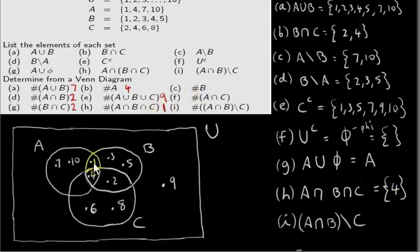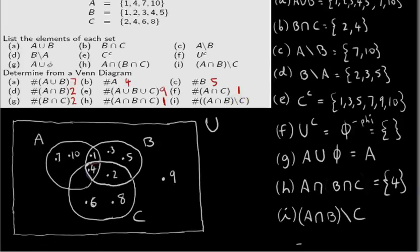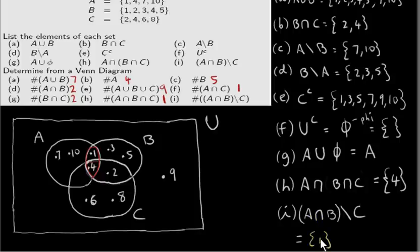What about the number of elements in B? We have five elements. The number of elements in A intersecting C is actually just one element — A intersecting C is this set here and there's just one element in it, that element is four. Finally, the number of elements in A intersecting B less C: A intersecting B is this set here and we subtract C, removing the four, so we're just left with the element one. So the answer is one.